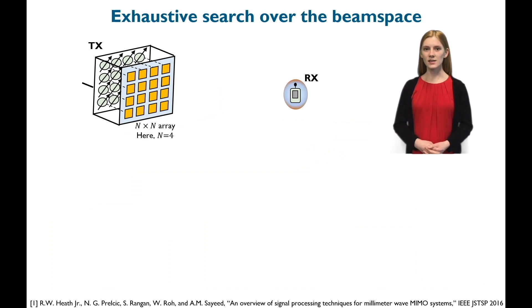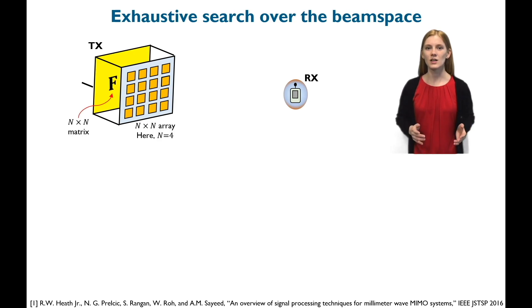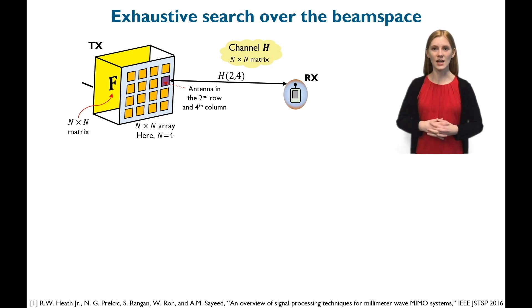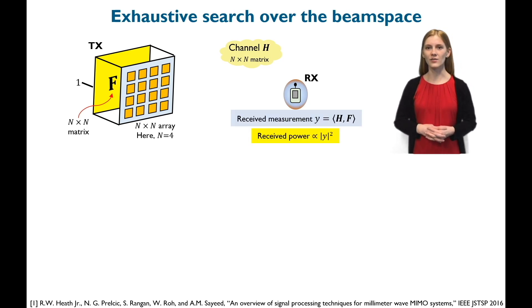Consider a wireless system with a planar antenna array at the transmitter and a single antenna receiver. The matrix F here models the phase shifts used at the transmitter and H denotes the channel matrix. The goal of beam alignment is to find a phase shift matrix F which maximizes the received power.